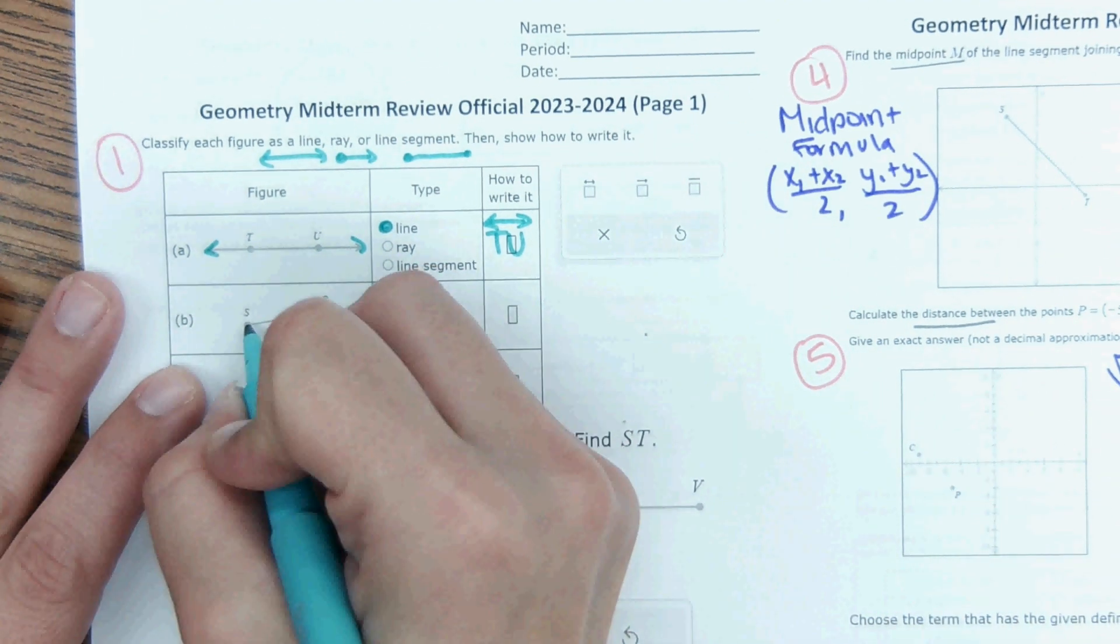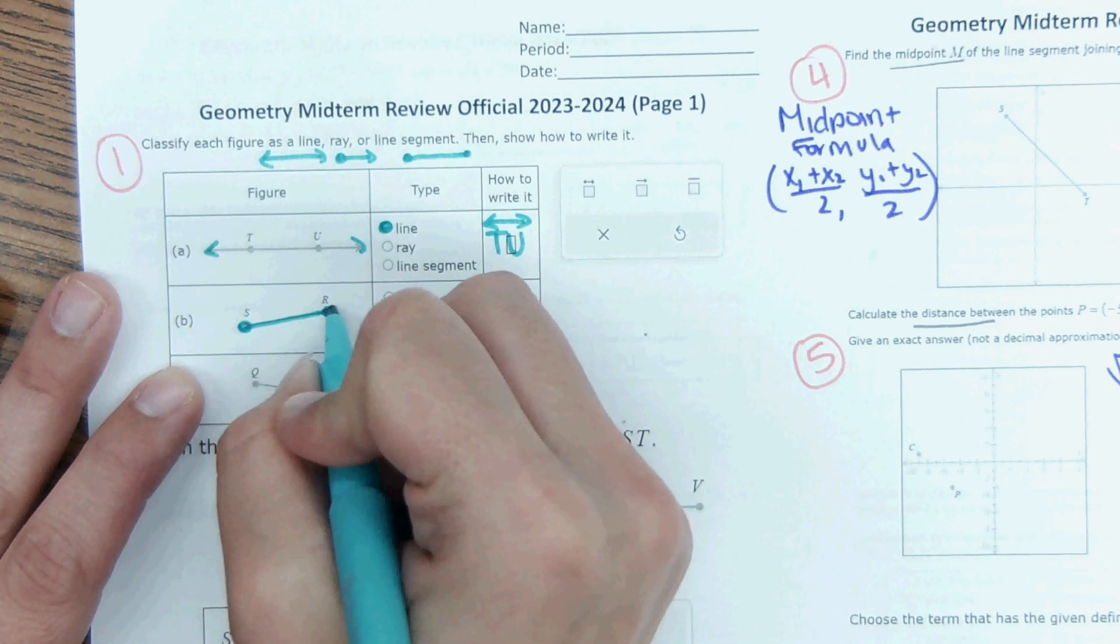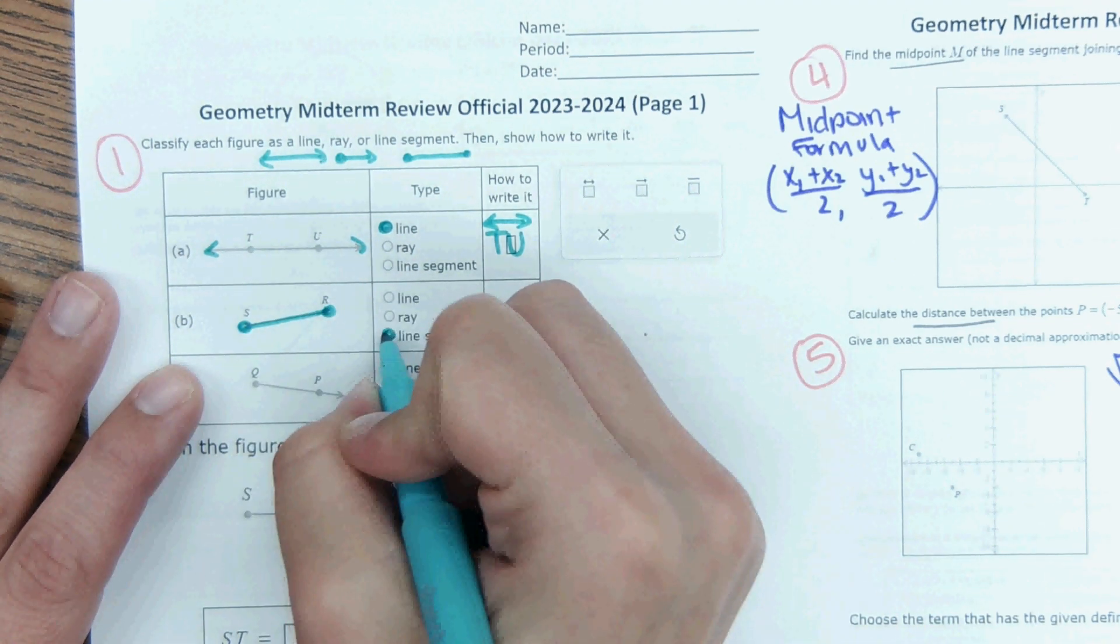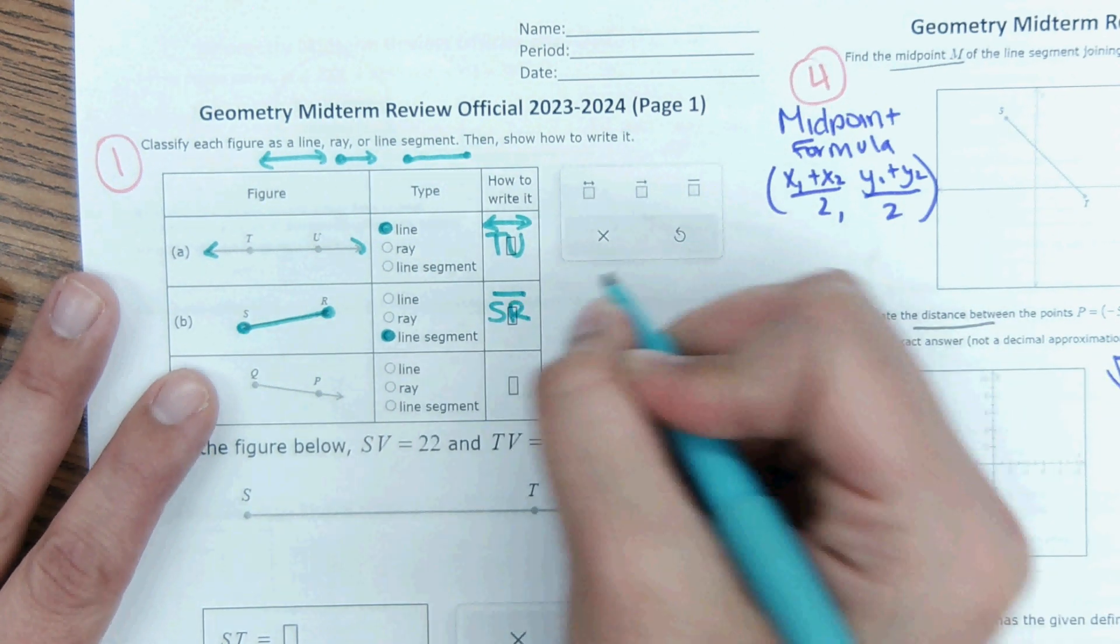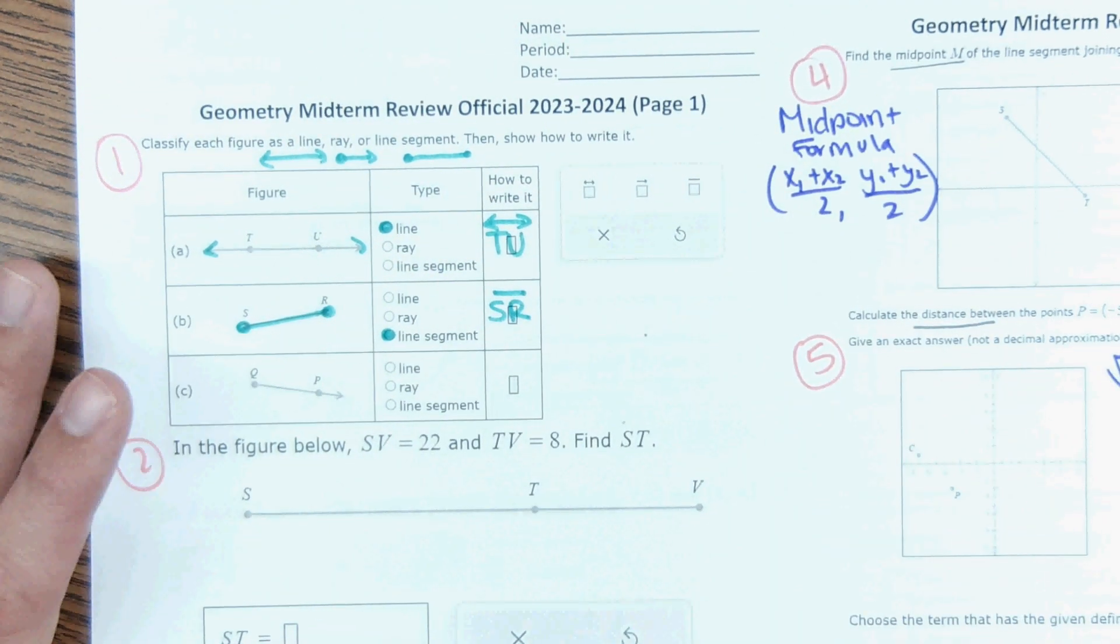Next one. This right here is a line segment because it has an endpoint on both sides. We would use this symbol that looks like a line segment. And then just the endpoints are how you'd name that line segment.